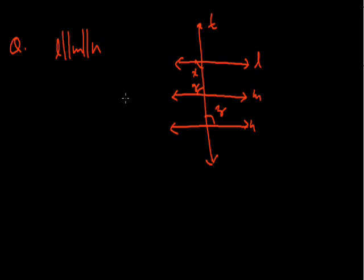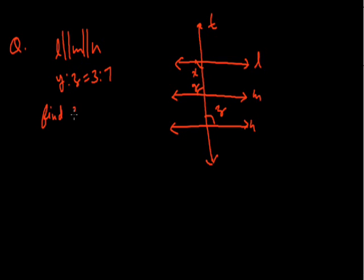It is given that the ratio of Y to Z is 3 to 7. We have to find the values of X, Y, and Z.